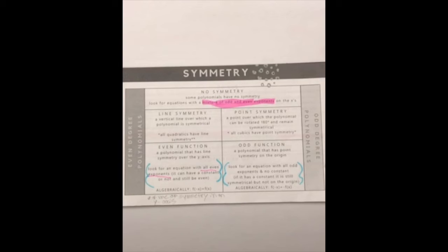So, in conclusion, when dealing with symmetry, graphically there will be line symmetry when the function is an even function, and there will be point symmetry if the function is an odd function. Algebraically, if the function has even exponents, then the function is an even function and there will be line symmetry. If the function has odd exponents, then the function is an odd function and there will be point symmetry. Just remember that if the function on a graph does not have symmetry on the origin or over the y-axis, then there is no symmetry and it is neither. And if the function has both even and odd exponents in the equation, then it is also non-symmetrical and it is considered neither. Thank you, and I hope that you found this video helpful.